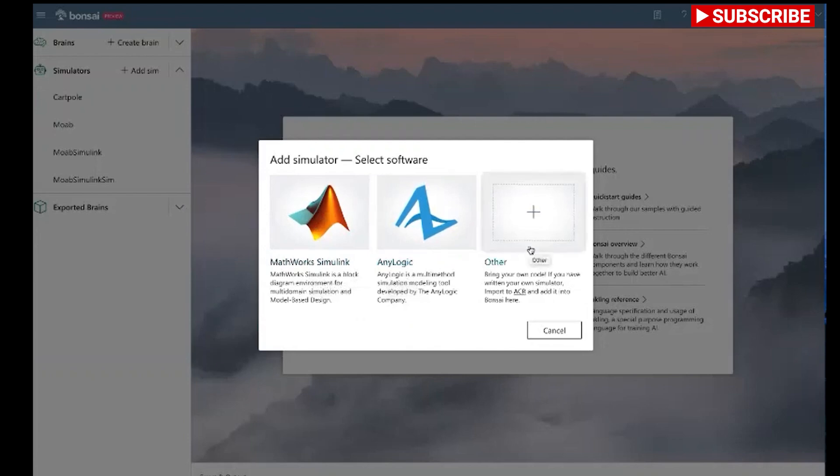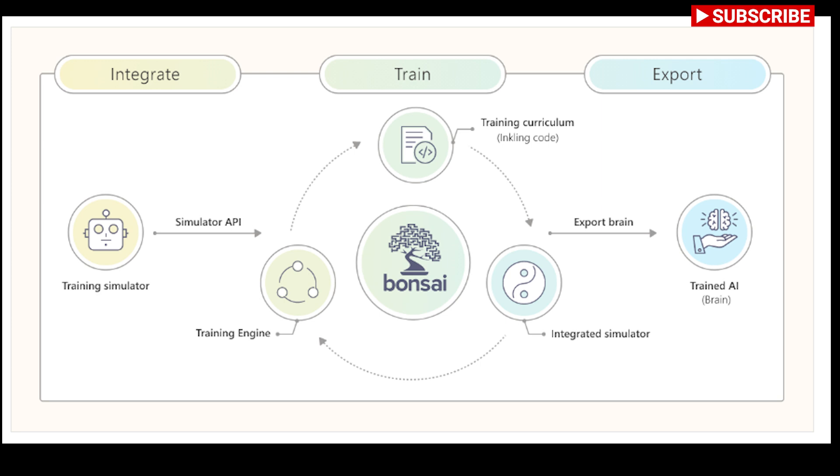AI training with Bonsai has several components that work together including training simulation, training engine, training curriculum, and brains.